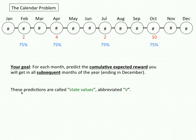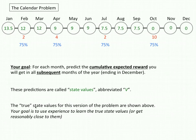The predictions, these predictions of the cumulative expected reward that you're going to get in subsequent months, they're called state values and it's abbreviated with V. Here in green I'm showing the true state values for this version of the calendar problem. So let's go through, let's go through this and see why these are the true state values.